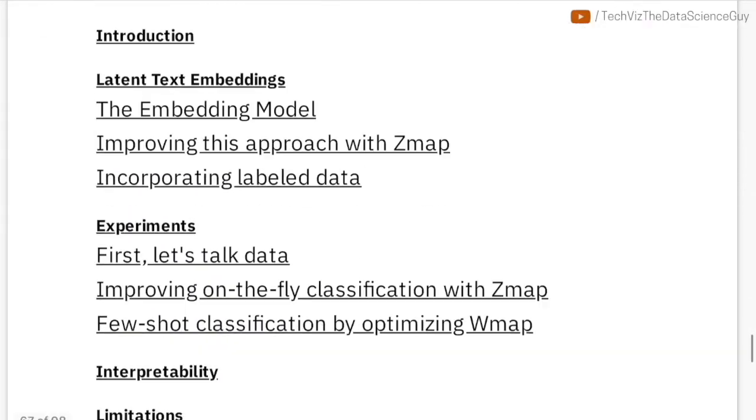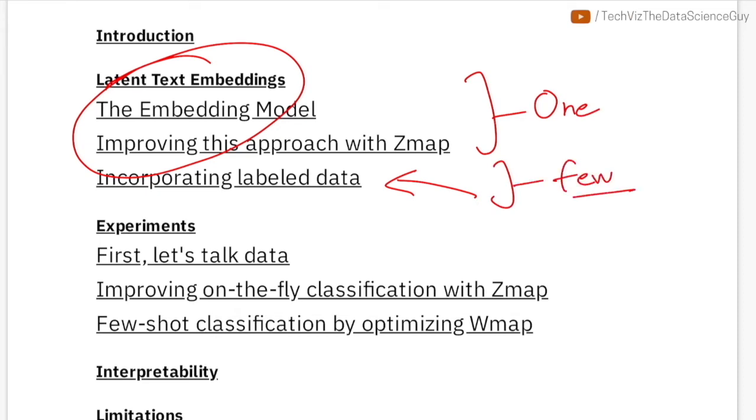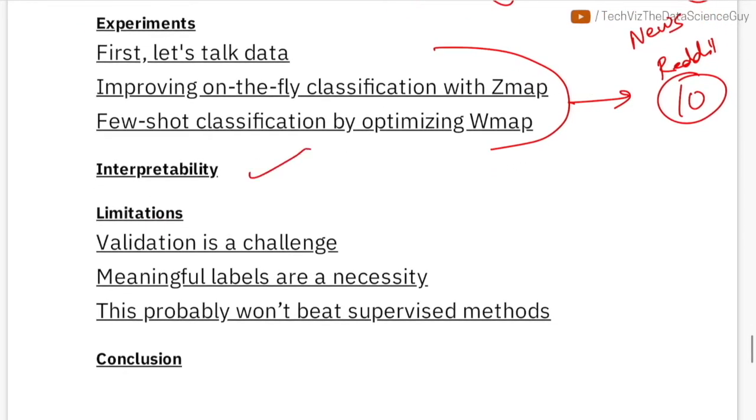So the report starts by laying out an outline. They discuss the embeddings model and a little improved version to perform better in zero-shot learning scenarios, and then how we can incorporate some data in the same technique to improve it further. Here we'll get to know about how to do one-shot followed by how we can extend that to capture a couple more labeled examples to make it Few-Shot. Then we'll see the validation of these approaches by applying them on certain datasets.